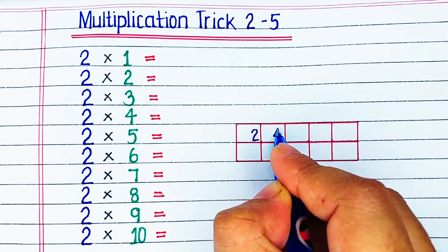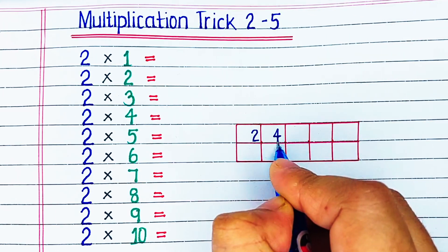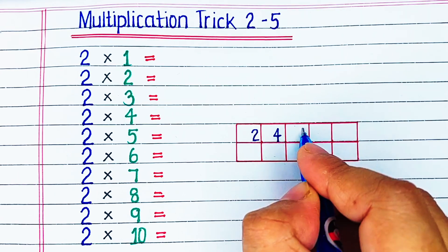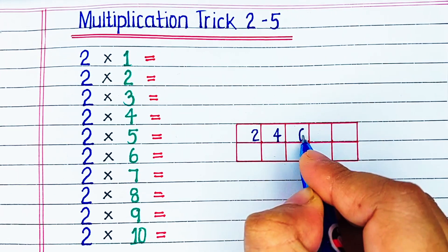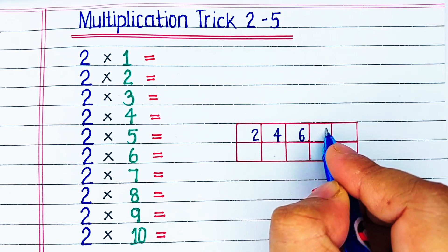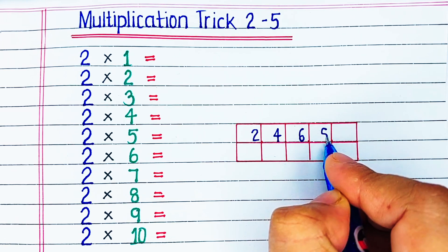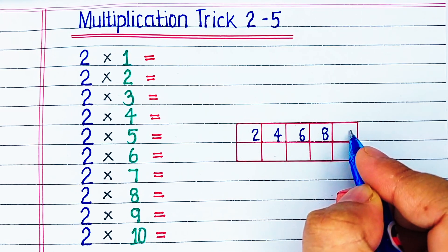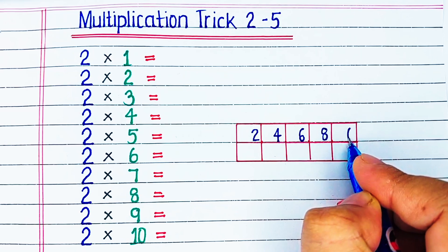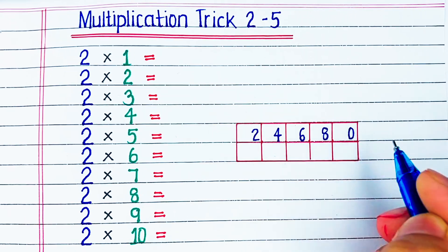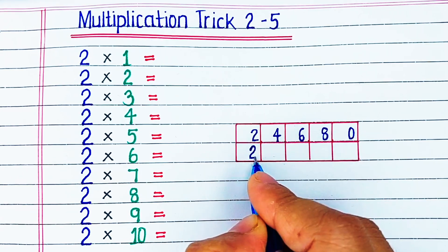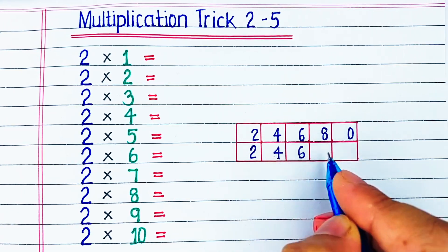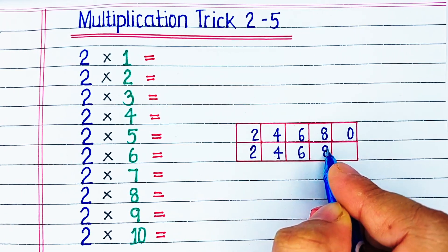For example, for the first column, we will write 2 times of 1, that is 2. For column number 2, we will write 2 times of 2. For column number 3, we will write 2 times of 3 and so on. In this manner, we will write 2, 4, 6, 8, 0 on the top row and 2, 4, 6, 8, 0 in the bottom row.